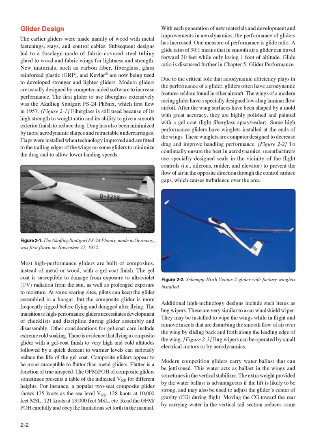The wings of a modern racing glider have a specially designed low-drag laminar flow airfoil. After the wing surfaces have been shaped by a mold with great accuracy, they are highly polished and painted with a gel coat, like fiberglass spray/sealer. Some high-performance gliders have winglets installed at the ends of the wings. These winglets are computer-designed to decrease drag and improve handling performance. To continually ensure the best in aerodynamics, manufacturers use specially designed seals in the vicinity of the flight controls — ailerons, rudder, and elevator — to prevent the flow of air in the opposite direction through the control surface gaps, which causes turbulence over the area.